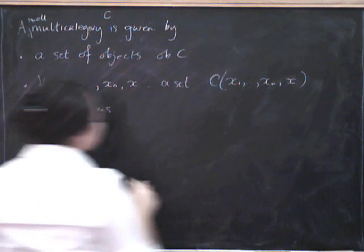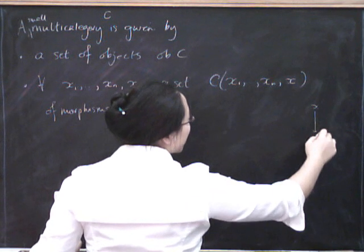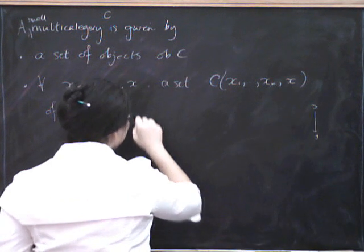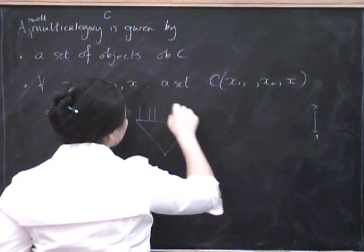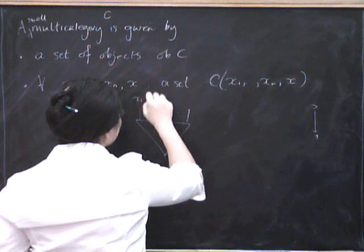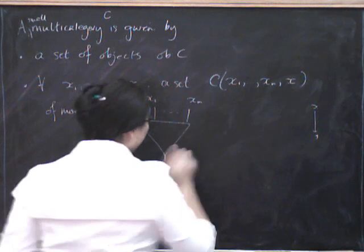Now, the way to think about these morphisms is to think that where previously a morphism was just something that went from x to y or something like that, what we're now going to have is a sort of multi-arrow with lots of things going in at the beginning, x1, x2, and so on up to xn, and one thing coming out at the end.